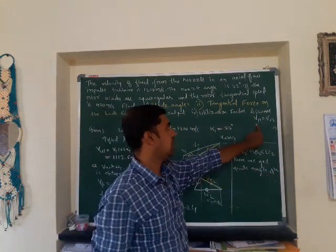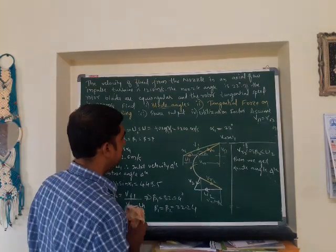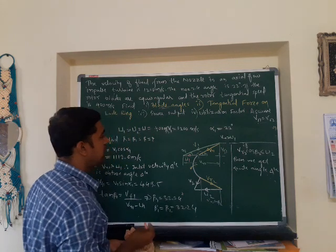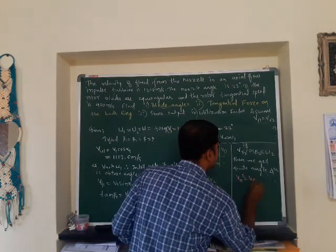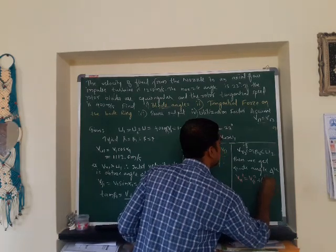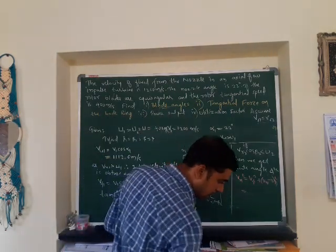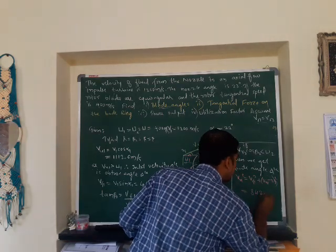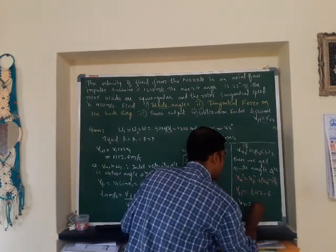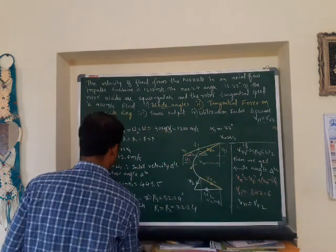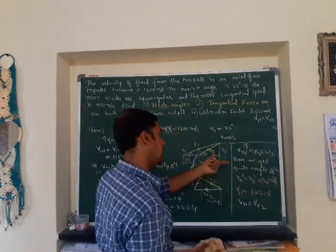We know VF1 equals VF2. We calculate VR1 using: VR1 squared equals VF1 squared plus (VU1 minus U1) squared from the inlet velocity triangle. Therefore VR1 equals 842.6 m/s, which equals VR2. Now we calculate VR2 times cos(beta2) to compare it with U2 and decide the shape of the outlet velocity triangle.